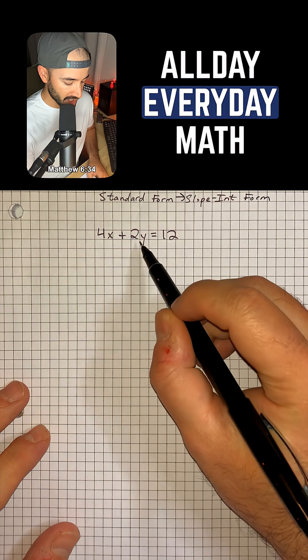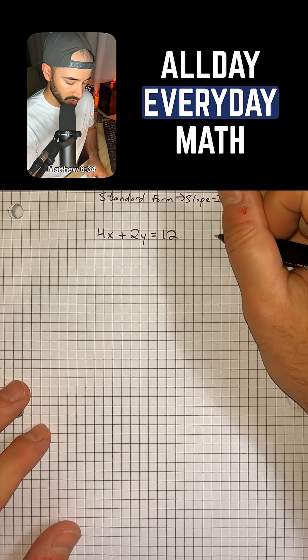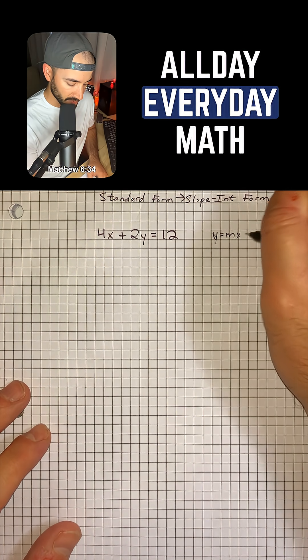So we have the equation 4x + 2y = 12 and we want to convert that to slope intercept form, which is y = mx + b.